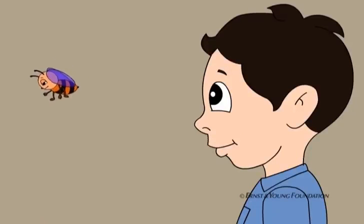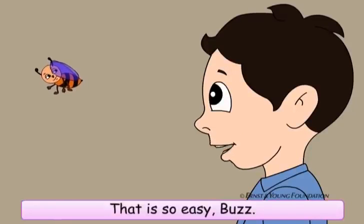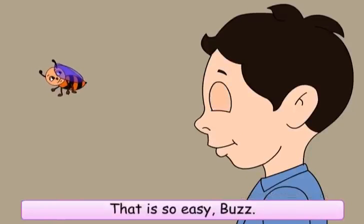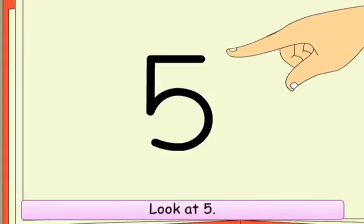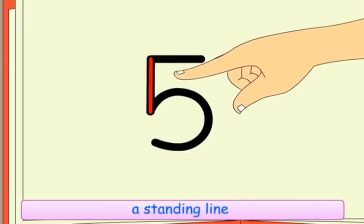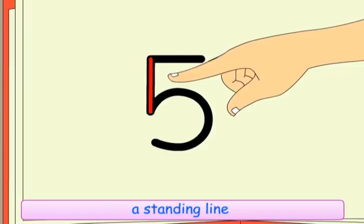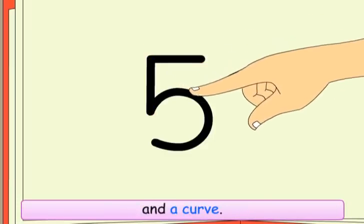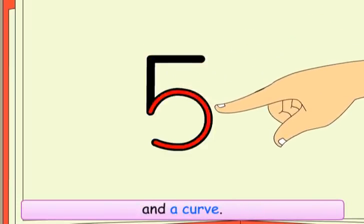Buzz says: 'That is so easy!' Then points out: 'Look at five. It has a sleeping line, a standing line, and a curve.'